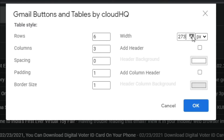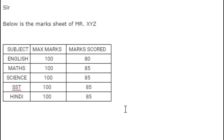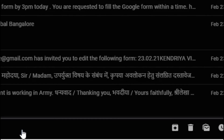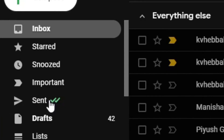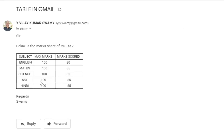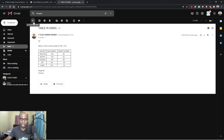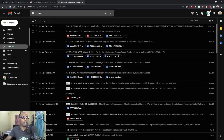Once your table is ready and the information is filled in, click the 'Send' button. Let's verify that the information was sent in table format — and yes, it arrived exactly in table format. So you can use this Chrome extension to send information in a table without any attachments like Excel sheets or Word documents, sending it directly in your Gmail.